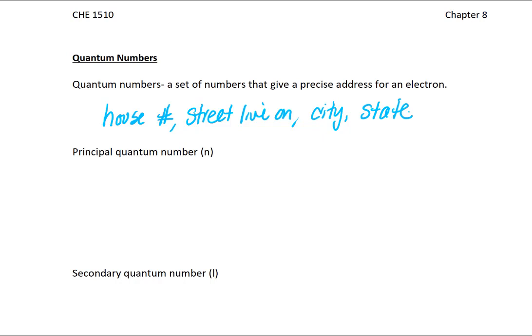So like how your street address has these four components, your electrons have four components that define where that electron is expected to be. The first component is called the principal quantum number, which is n. You have seen n before because n is the shell or the energy level. So notice how this numerical value has three different names for it - shell, energy level, principal quantum number - all describing the same thing.